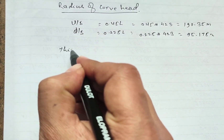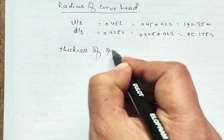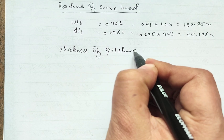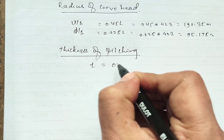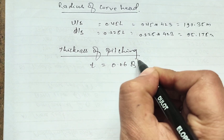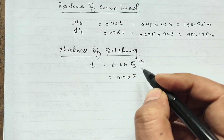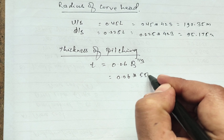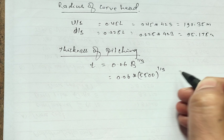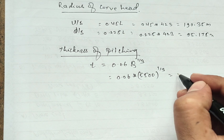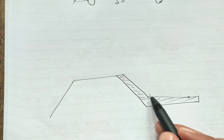Next, we calculate the thickness of pitching using T equals 0.06 times Q to the power of one-third equals 0.06 times 5500 to the power of one-third equals 1.059 meters. This is the pitching section thickness.